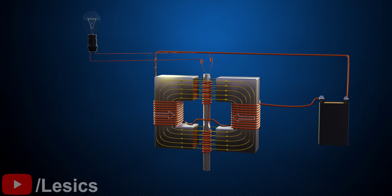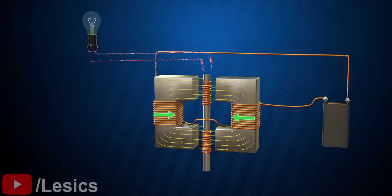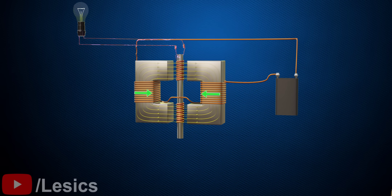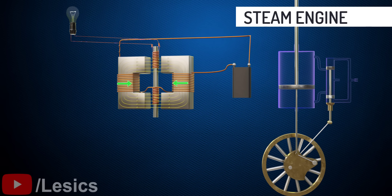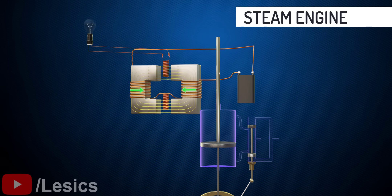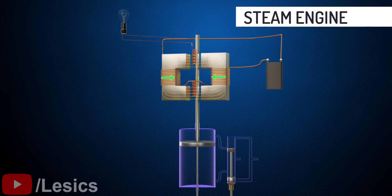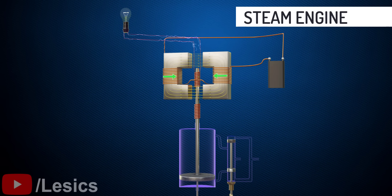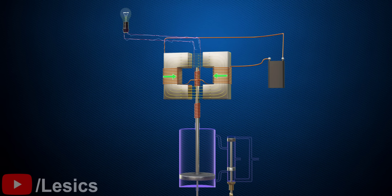Now, we need a mechanism to generate the reciprocating motion for inducing coils. What's better than a reciprocating steam engine? Just wind the copper coils to the end of the piston rod and voila!